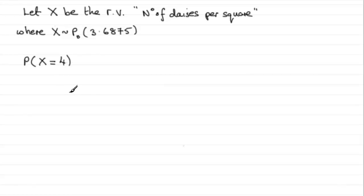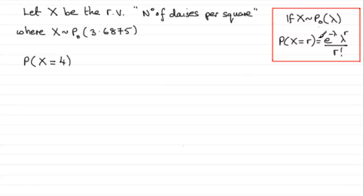And because we've got this awkward mean, we're going to have to use the formula which we should already know. Probability X equals r is e to the minus lambda, lambda to the power r, divided by r factorial. So if we apply this here, what we're going to have is...